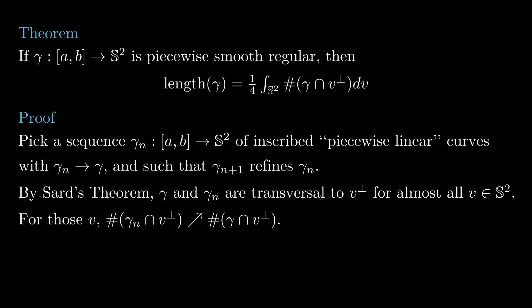Then by Levi monotone convergence theorem, the integrals corresponding to gamma n converge to the integral corresponding to gamma. Since we knew that the length of gamma n converges to the length of gamma, and the formula holds true for piecewise linear curves, the result follows for arbitrary piecewise smooth regular curves.